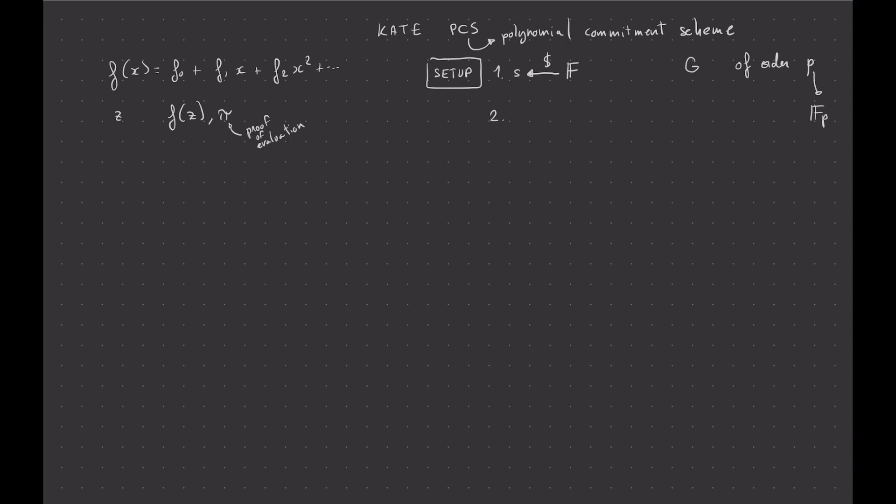And second is to release pretty much these values: G, so the generator of our group, SG, S squared G, and here you can write it in elliptic curve notation if you want, S cubed G, up until some power of S. And usually, this is going to pretty much place an upper bound on the degree of the polynomial that you can commit to.